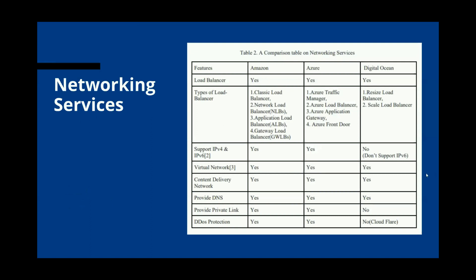Now describing networking services: cloud networking service refers to connecting networking resources as a third-party provider. Each cloud provider has its own networking system, working in a certain way and supported by certain features. We focus on the three selective providers — Amazon, Azure, and DigitalOcean. Networking services mainly provide load balancer, IP version 4 and IP version 6 support, virtualization network, content delivery network, DNS, private link, and DDoS protection.